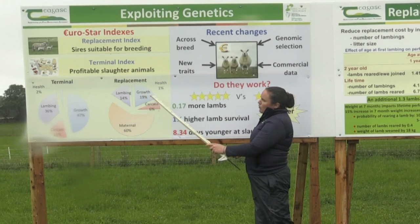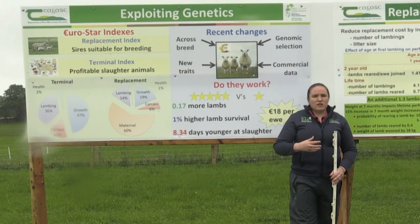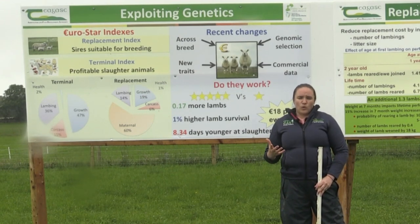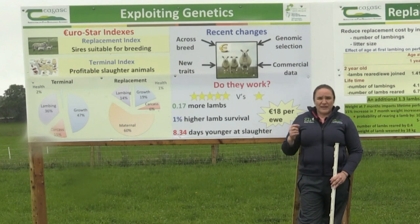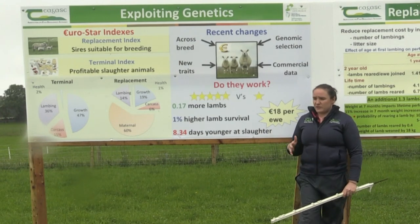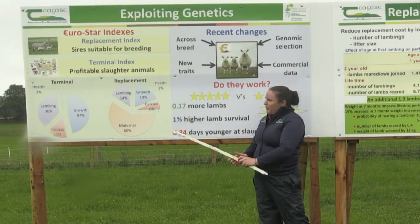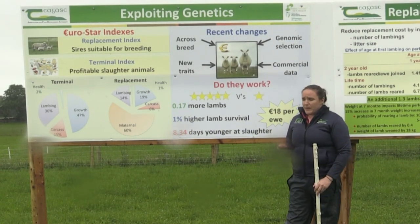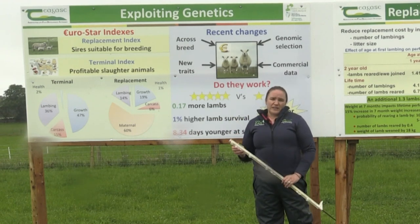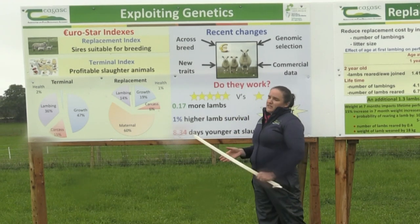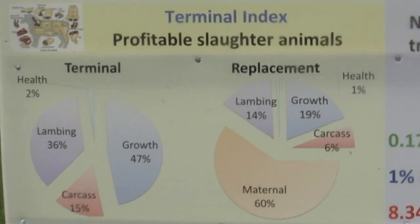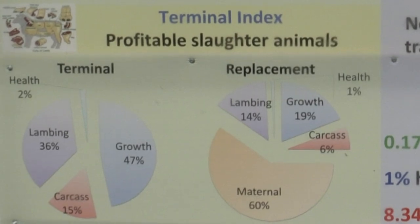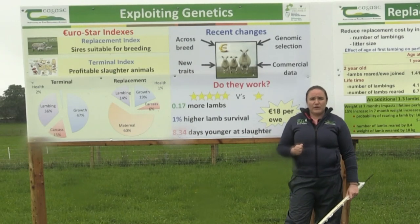Growth is also very important in the replacement index. Not only do we want a ewe that delivers in terms of litter size and milk, we also want her to grow that lamb and get it away to slaughter as quickly as possible. Lambing — the ability of the ewe to give birth — has a weighting of about 14% within the index. There's also some weighting on carcass traits such as fat and conformation, and health is a new addition, currently covering lameness and mastitis scores.